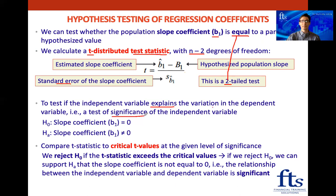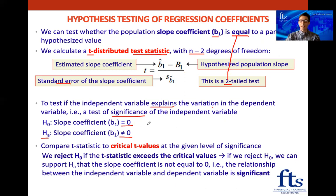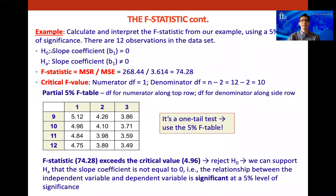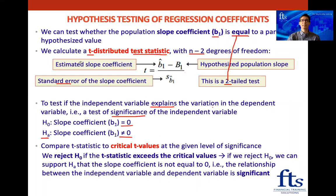We start as always with the null and alternative hypotheses. I like to start with the alternative hypothesis — that is the one we want to support. Here we want to support that the slope coefficient is not zero, because if it's not zero then it is significant. The null hypothesis is what we want to reject: that the slope coefficient equals zero. This is actually an alternative to the F-test we saw in the previous class.